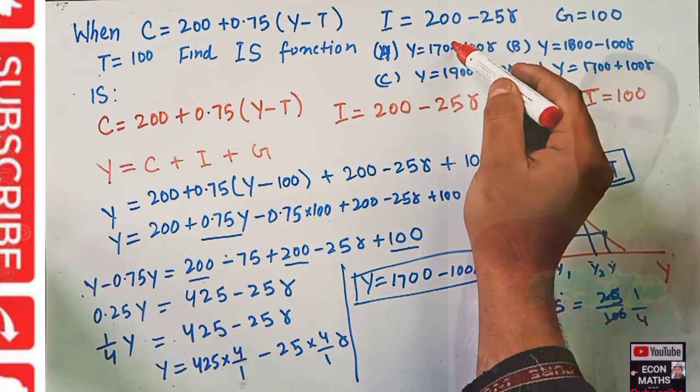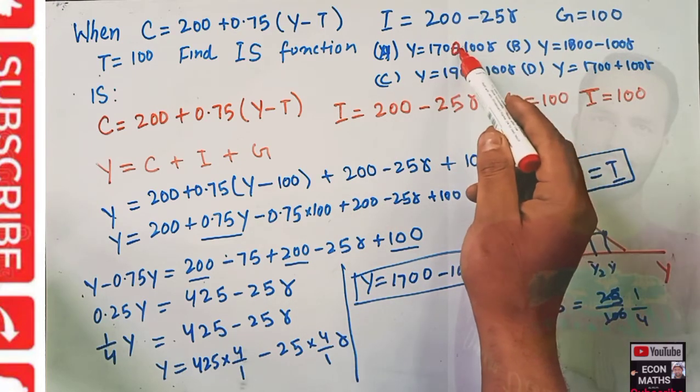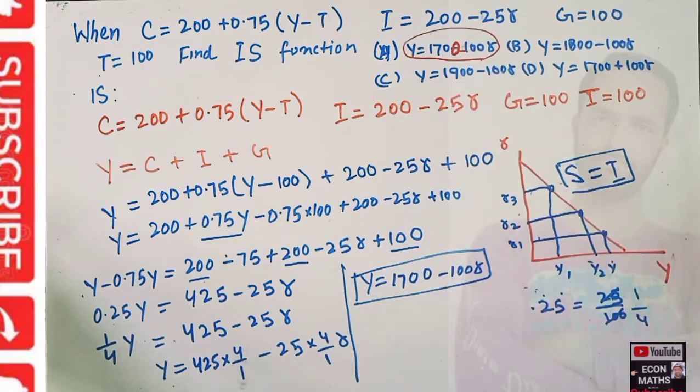The correct option should be the first option. It shows that income is a negative function of rate of interest, displaying different combinations of rate of interest and income where savings equals investment. I hope I made myself clear and you found this video helpful. Thank you.